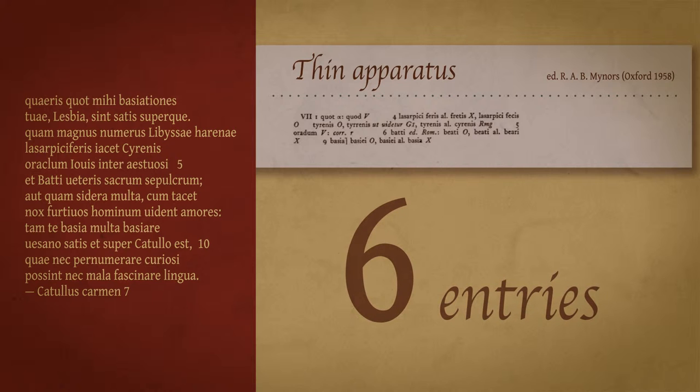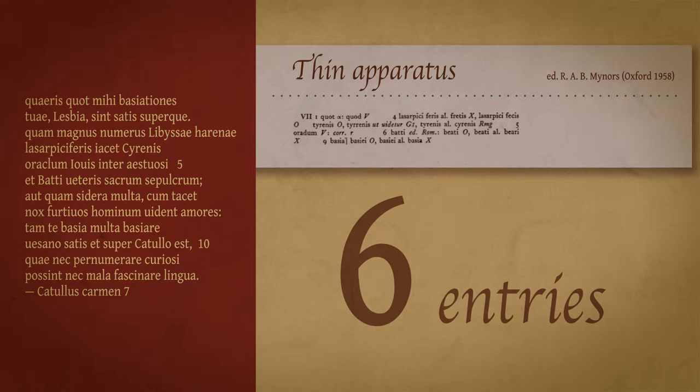In none of those six instances is the text really in doubt. The mistakes made in the various manuscripts are easily identifiable and the solution is clear in each case. One could get the impression from such an apparatus that the text of Catullus is basically in pretty good shape, with no great difficulties attached to it. That would, however, be a very misleading impression to take away.